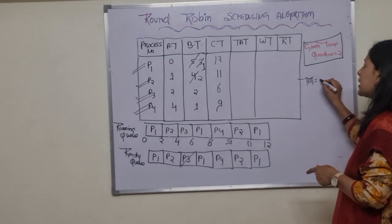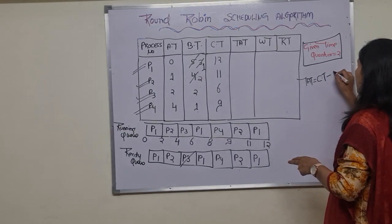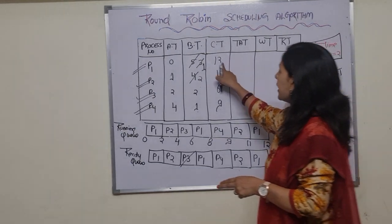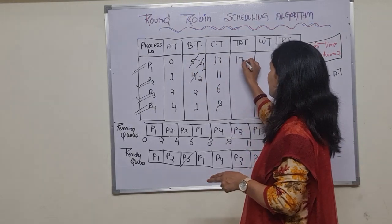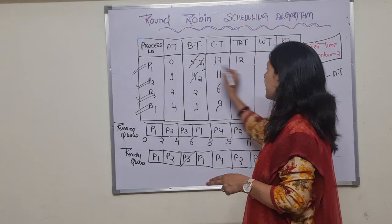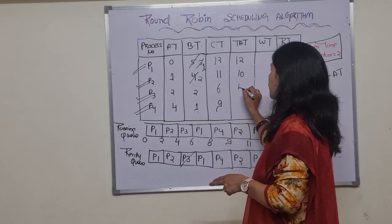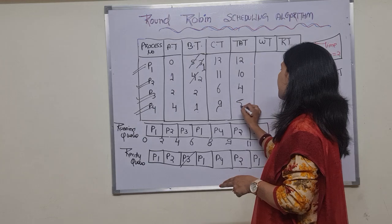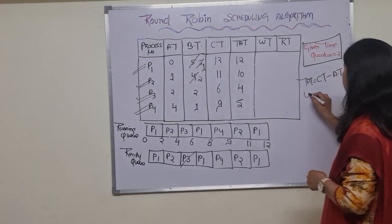Now we calculate the turnaround time, which equals completion time minus arrival time. So: P1 = 12 - 0 = 12; P2 = 11 - 1 = 10; P3 = 6 - 2 = 4; P4 = 9 - 4 = 5.